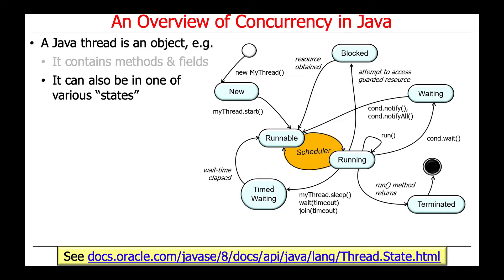A thread can be in various states. When first created it's in the new state; when started it becomes runnable; when the thread scheduler runs it on a core it becomes running. From there it may go into waiting, timed waiting, or blocked states. Eventually it falls off the run method and becomes terminated, and its state can be reclaimed by the virtual machine.